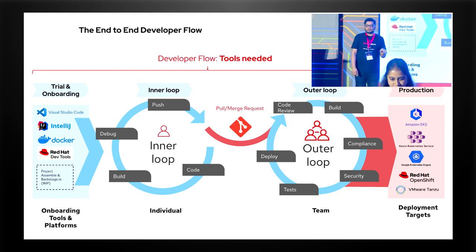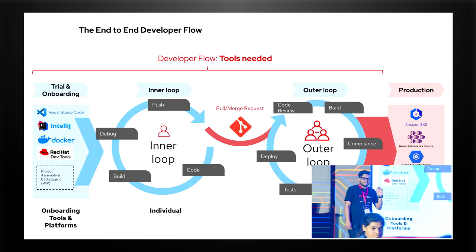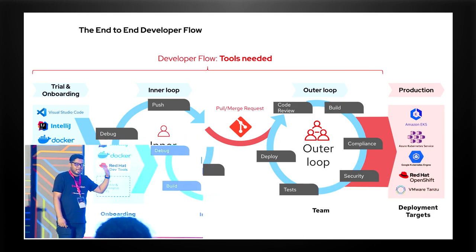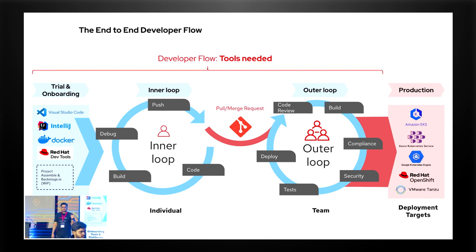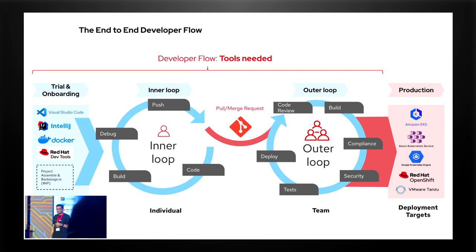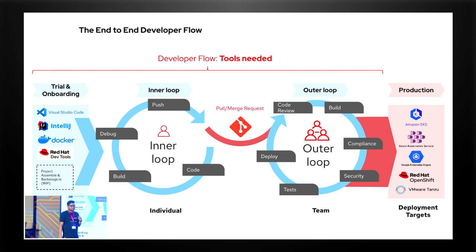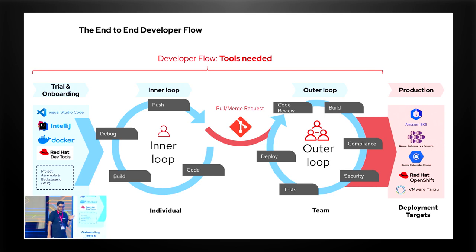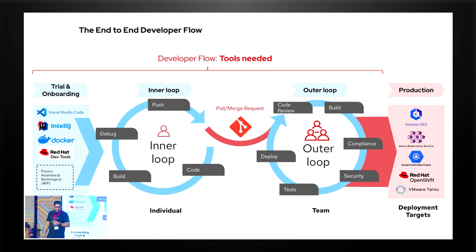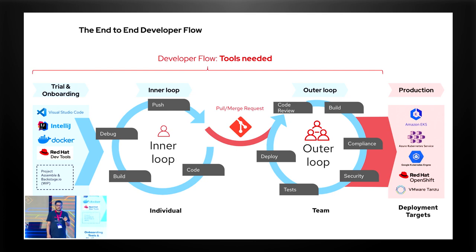This is the end-to-end developer flow. From a developer perspective, the scenario Red Hat is providing starts directly from trial and onboarding. The first instance of providing a developer experience is that you want people to have their Red Hat OpenShift clusters provisioned. That comes under trial and onboarding, which can be done either through Visual Studio Code, IntelliJ, or running on Docker, Podman, and other tools. We are also coming up with support for Backstage down the line next year.